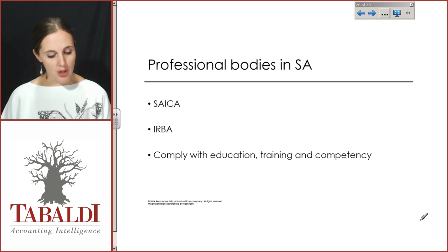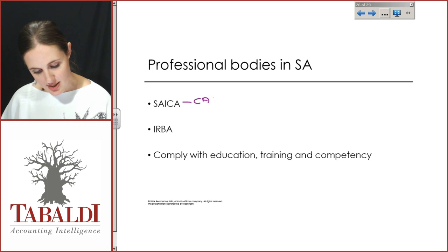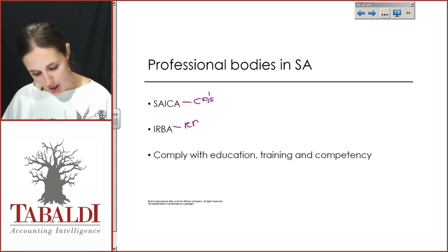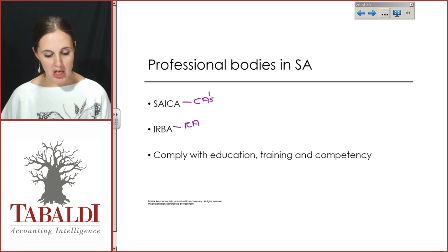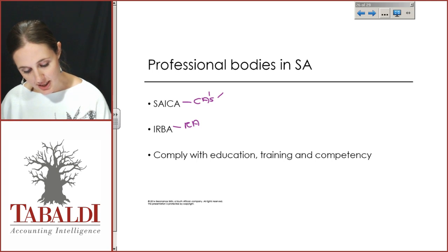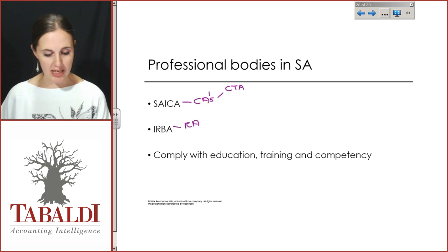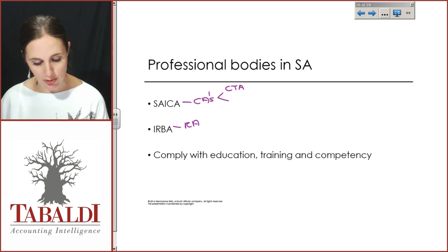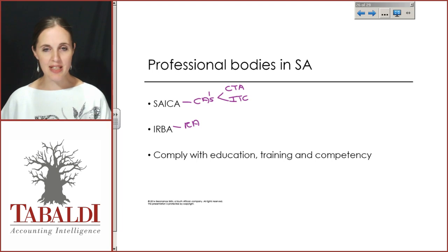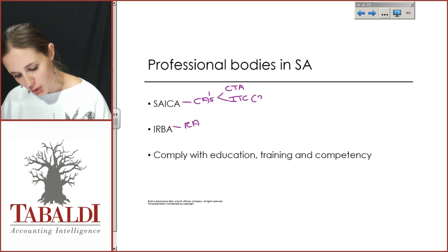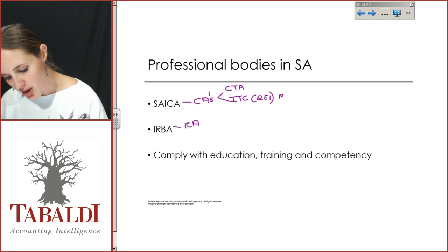Your professional bodies in South Africa — we've spoken about SAICA and IRBA. SAICA governs the requirements for you to qualify as a CA, and IRBA governs the requirements to qualify as an RA. SAICA requires at the very least that you pass CTA and gives accreditation to universities based on their ability to prepare you for your first board exam, the ITC — your Initial Test of Competence — which is what we used to call QE1 or Board 1.